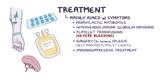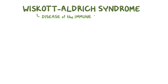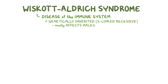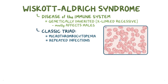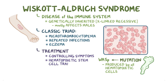Immunosuppressive treatment is sometimes needed to treat autoimmune conditions. Hematopoietic stem cell transplantation is a potentially curative treatment that is sometimes used. As a quick recap: Wiscott-Aldrich syndrome is a disease of the immune system that's genetically inherited in an X-linked recessive manner, so it mostly affects males. The classic triad of findings include microthrombocytopenia, repeated infections, and eczema. It's caused by a mutation of the Wiscott-Aldrich syndrome protein, which is produced by all of the hematopoietic cells. Treatment is focused on controlling the symptoms, and hematopoietic stem cell transplantation is currently the only potentially curative treatment.